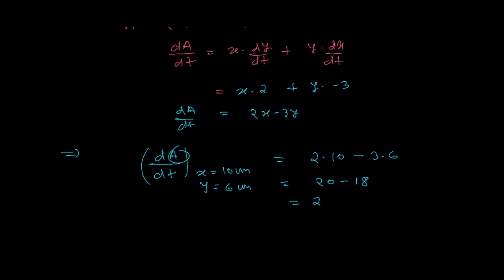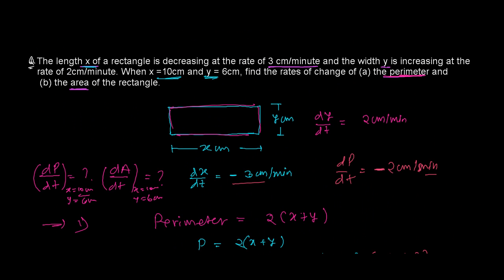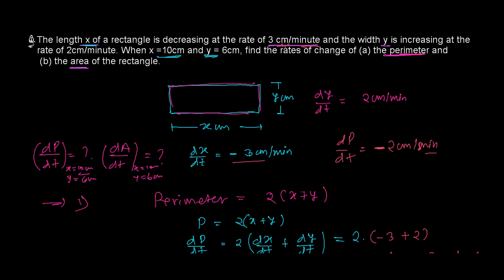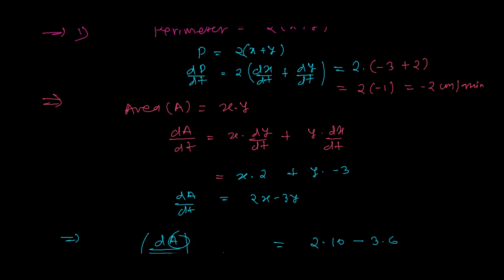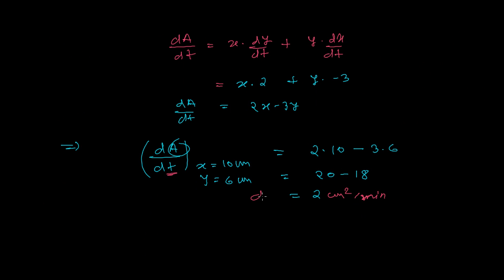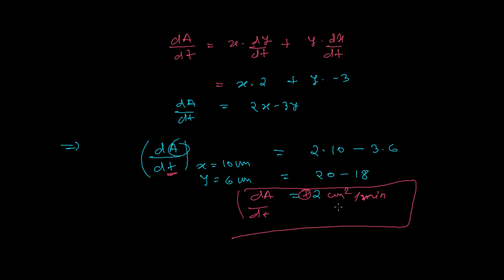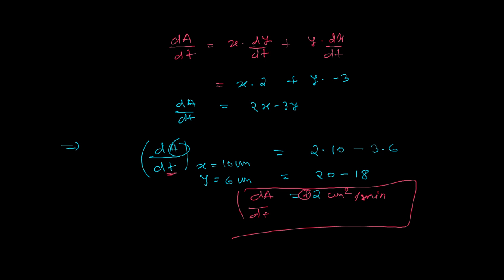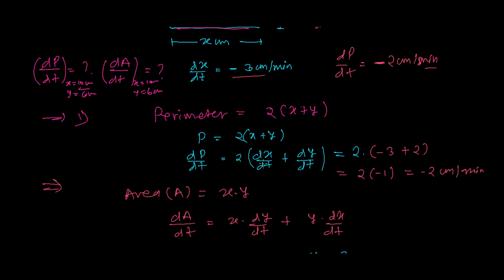Since this is area, the unit is centimeter square per minute. So dA over dt equals 2 cm² per minute — the area is increasing by 2 cm² per minute. But the perimeter is decreasing by 2 cm every 1 minute.